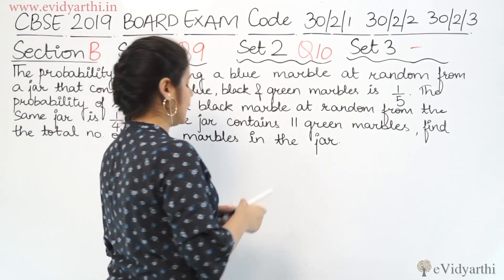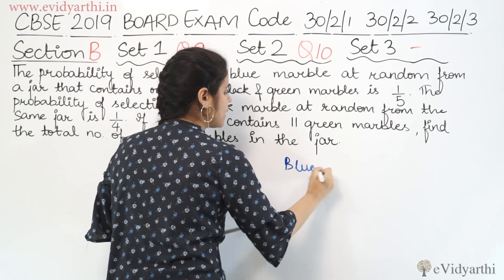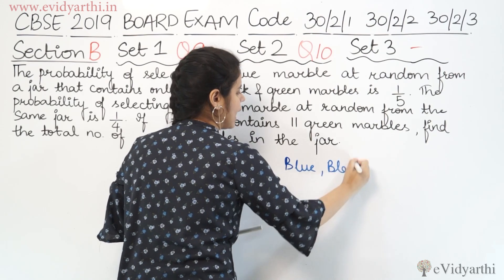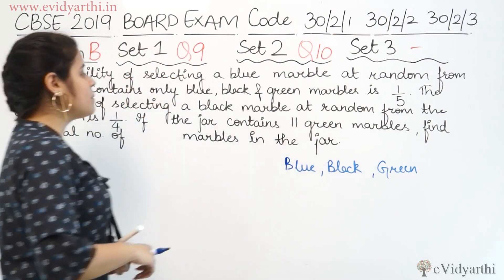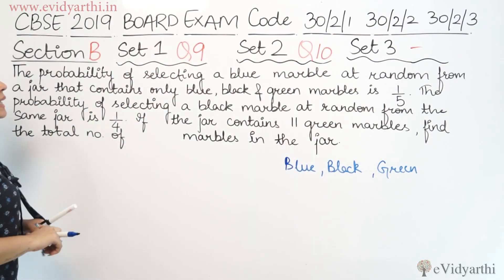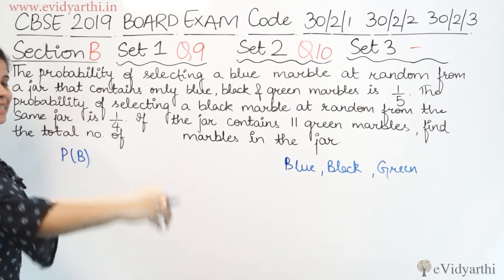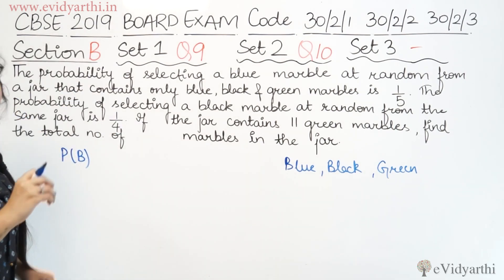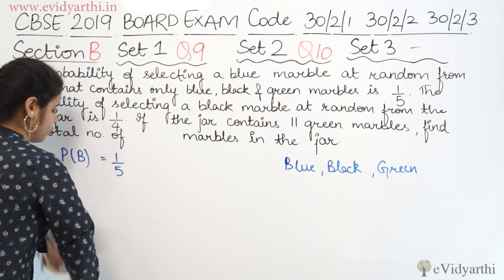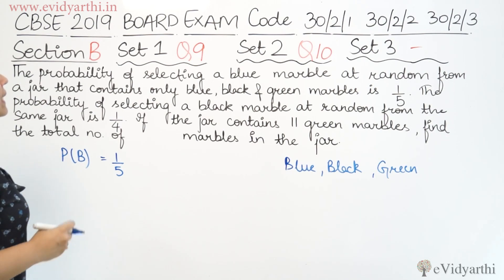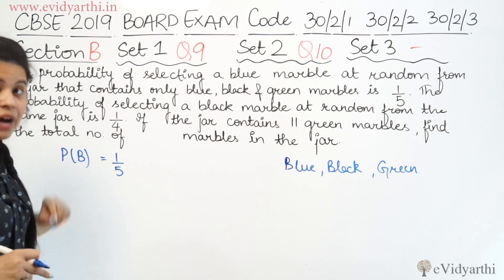So, the question tells us there is a jar containing blue, black, and green color marbles. The probability that a randomly selected marble is blue is 1/5. Next, we are given that the probability of selecting a black marble at random from the same jar is 1/4.